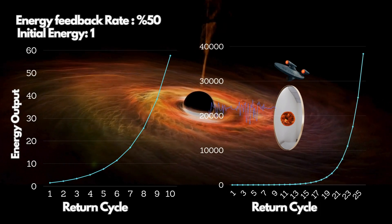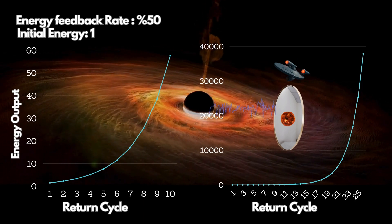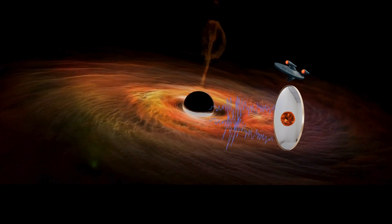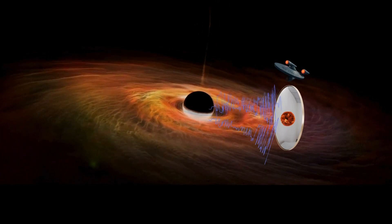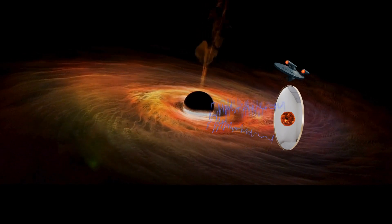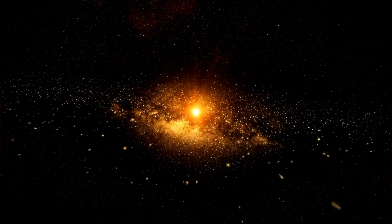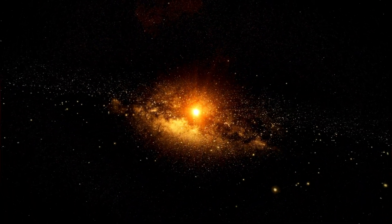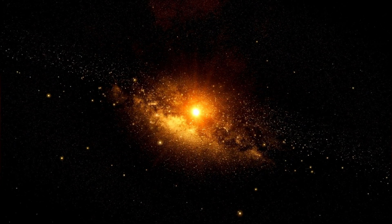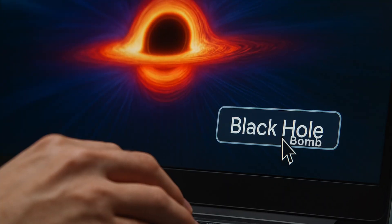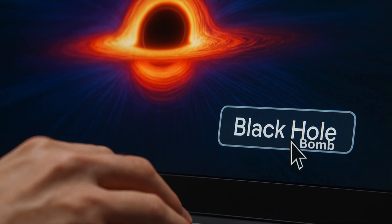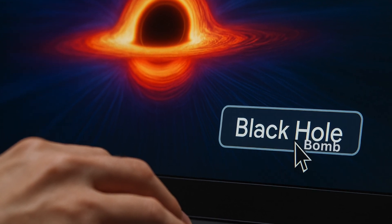And if such growth continues unchecked, you're no longer controlling the energy. The energy is controlling you. In the fourth stage, we begin to see that the energy increase isn't infinite. Because the wave grows stronger with every cycle, the system eventually reaches a point where it becomes overloaded, filled with more power than it can contain. That accumulated energy either leaks outward or releases in a massive explosion. At this moment, theoretically, a black hole bomb is formed. A device in space physics that amplifies its own energy and eventually explodes.